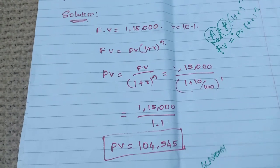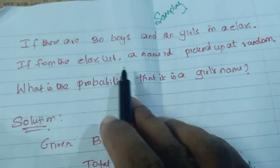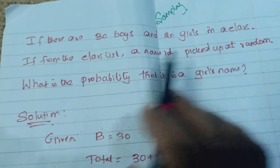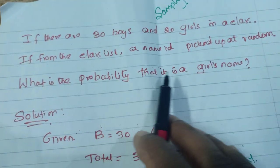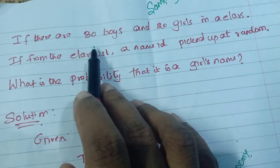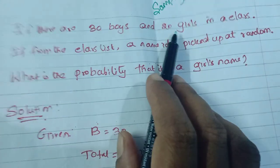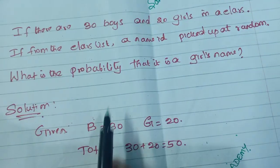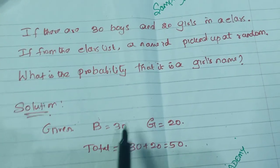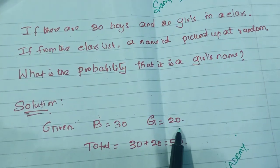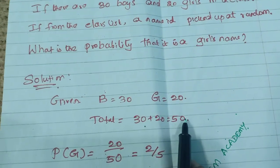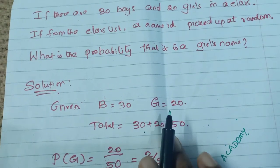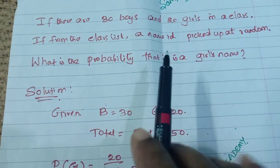One more problem I want to discuss, in CA/B that is sampling. If there are 30 boys and 20 girls, the total number of students in a class — if from the class a name is picked up at random, what is the probability that it's a girl's name? Total: 30 boys and 20 girls. Total number of students is 50, out of which we need to pick only one girl.